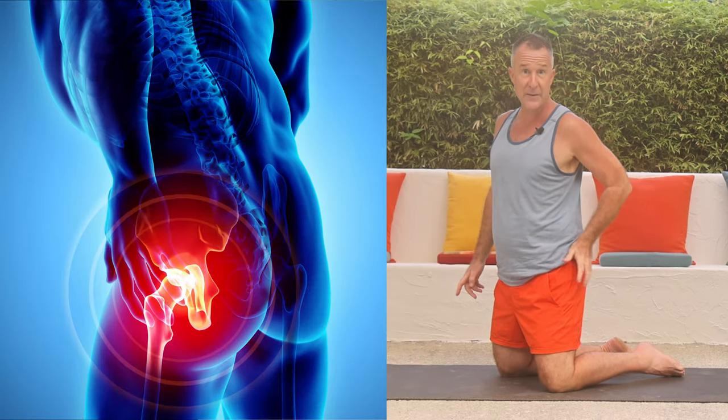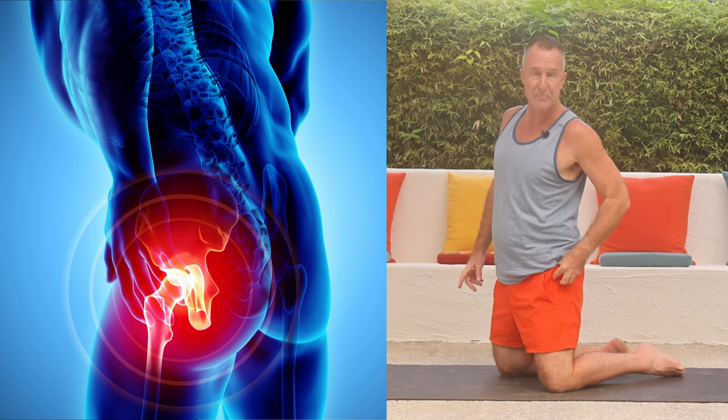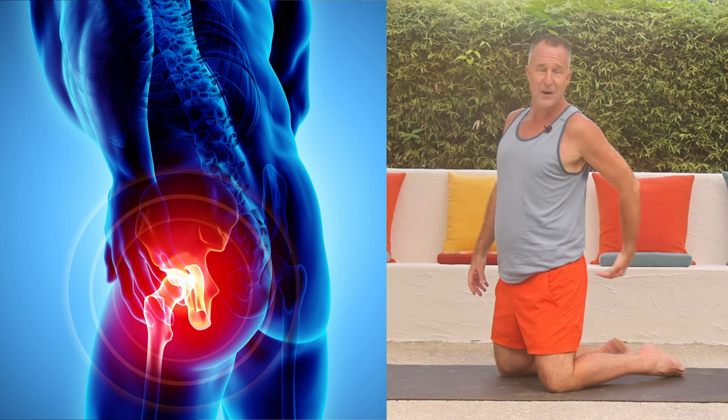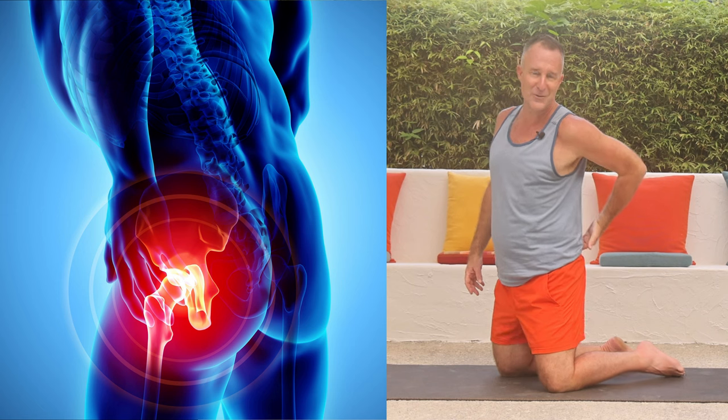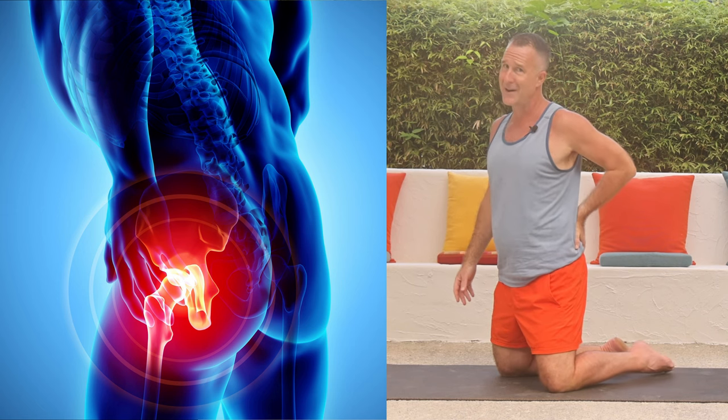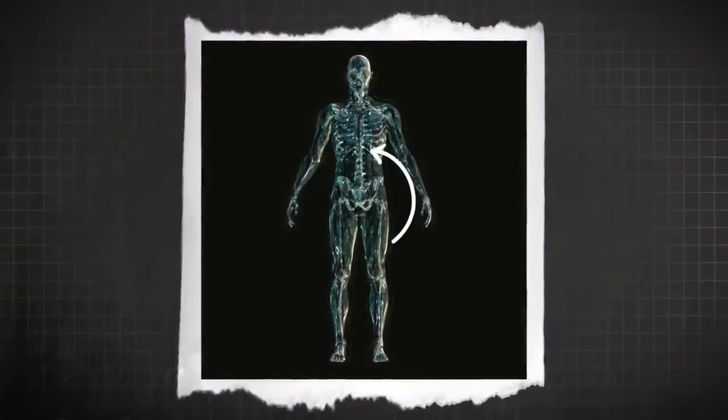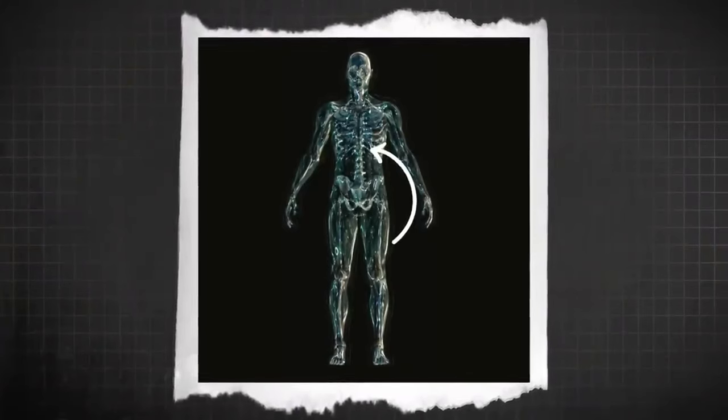A lot of people when they say they have pain in their hips will point somewhere into the side of the hips just above the hip bone — which is called the greater trochanter — or more into the glutes. There are a lot of muscles in this area, and one of the worst things we can do is actually stretch those muscles, because stretching makes those muscles weaker. Stretching inhibits the neuromuscular connection between the brain and the muscles so that the muscles lose their ability to contract on demand.